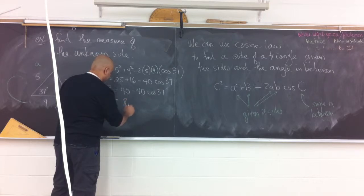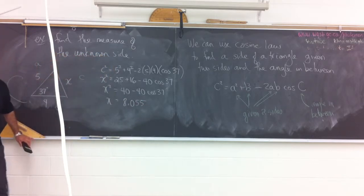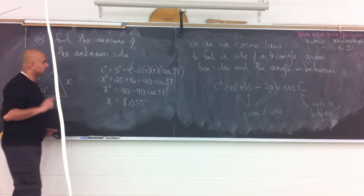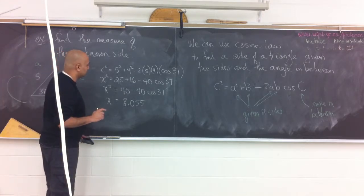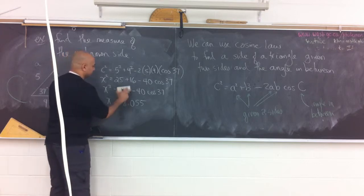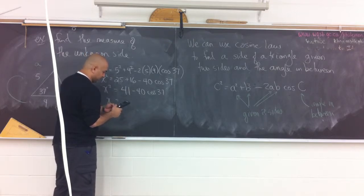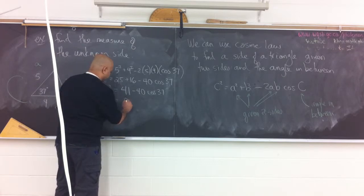We have 40 minus 40 cosine 37. Please don't cancel those 40s. That's not really a 40, it's a 40 times the cosine 37. So, 25 plus the 16 is 41. Let me just calculate. 8.055. 25 plus 16 is 41. Oh, pardon me. Thanks, Vanessa. 9.055.